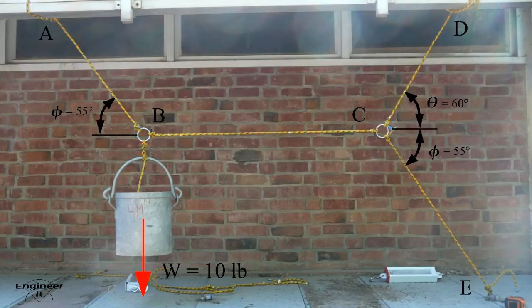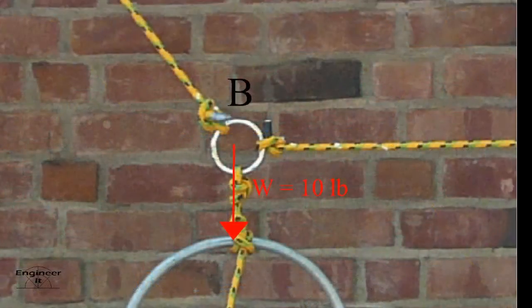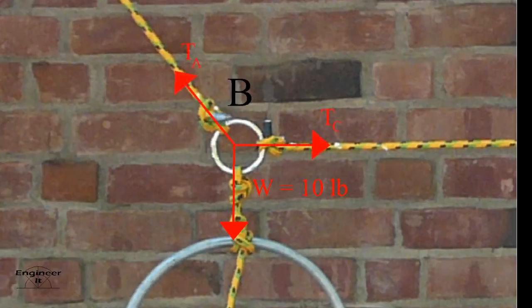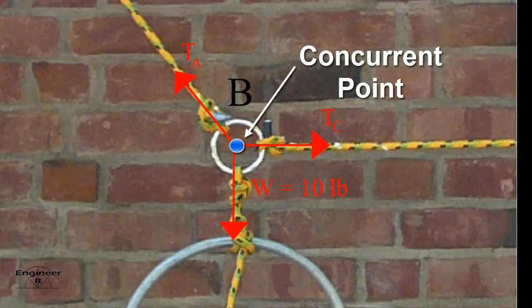Create a free body diagram showing all forces applied to the steel ring at point B. Remember ropes only take tension forces that pull on the ring. The line of action of these forces all pass through the concurrent point located at the center of the steel ring.